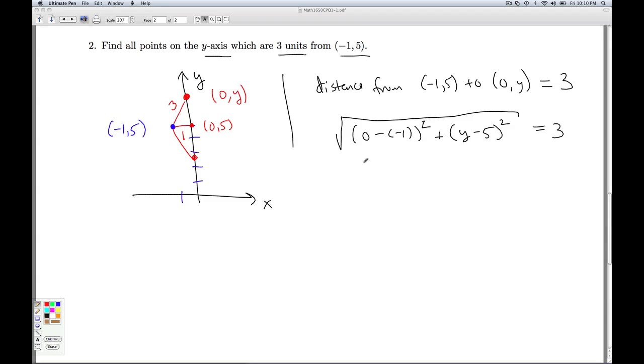We can simplify this. 0 minus a negative 1 is a positive 1. And you square that, you get 1. Okay, so now we solve for y. And we'll go back to our intermediate algebra knowledge. To get rid of that square root, we're going to square both sides. And that will give us 1 + (y - 5)² = 9. To get the y by himself, I can subtract 1 off both sides to get the square by itself.